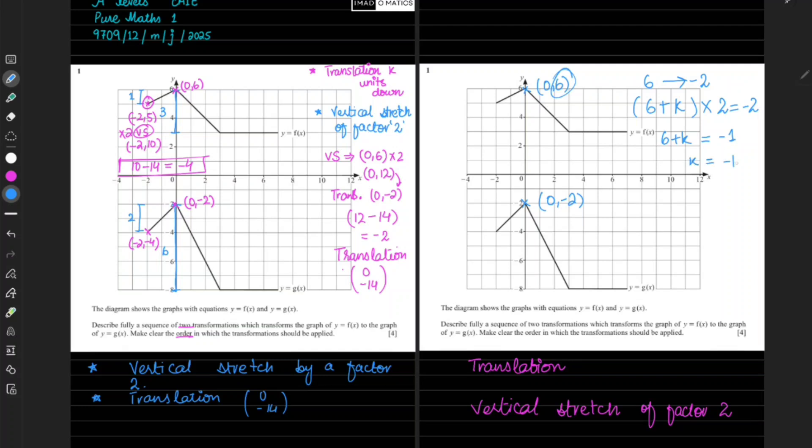So that means your translation has happened of zero comma minus seven. This has shifted seven units down. That means this point will be the point, and then it is stretched by a factor 2 that made it zero comma minus two. I hope it makes sense to you.